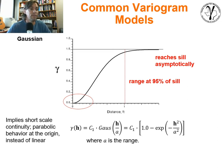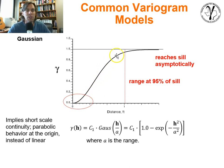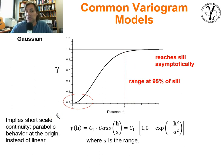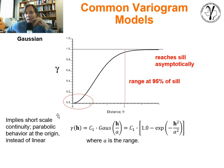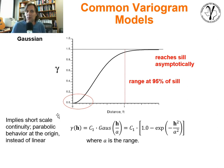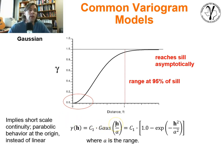The Gaussian is very different than both of the previous. In the very short distances, it has incredible spatial continuity — very smooth, short-scale type of behavior. Then it rises up towards the range, and like the exponential, it reaches the sill asymptotically; at 95% of the sill, we call it the range. This model often gets used for phenomena where we expect short-scale continuity — thicknesses, topography. Things like that don't tend to jump around a lot. Just like the spherical and exponential, we're dealing with the lag distance h normalized by the range.